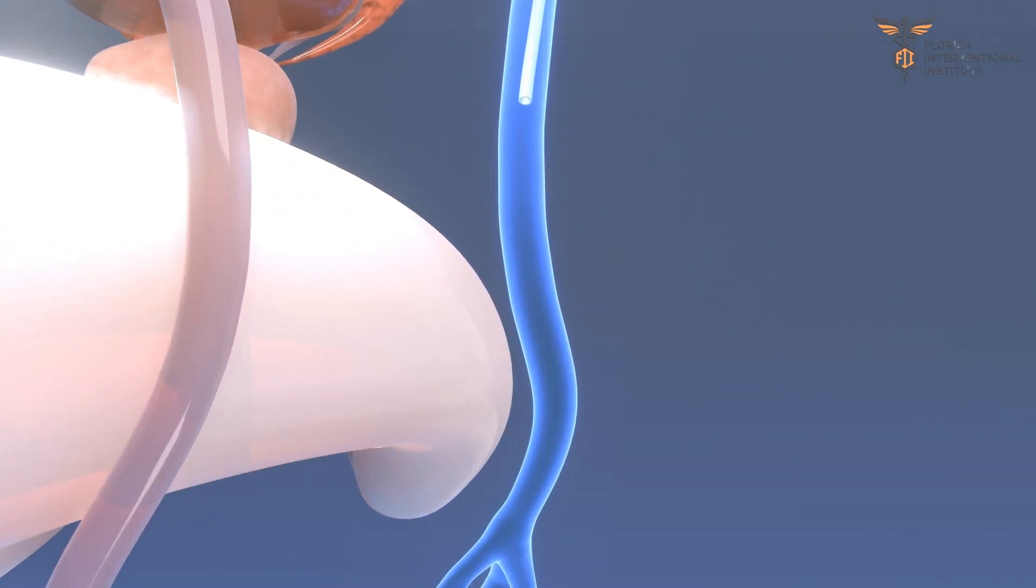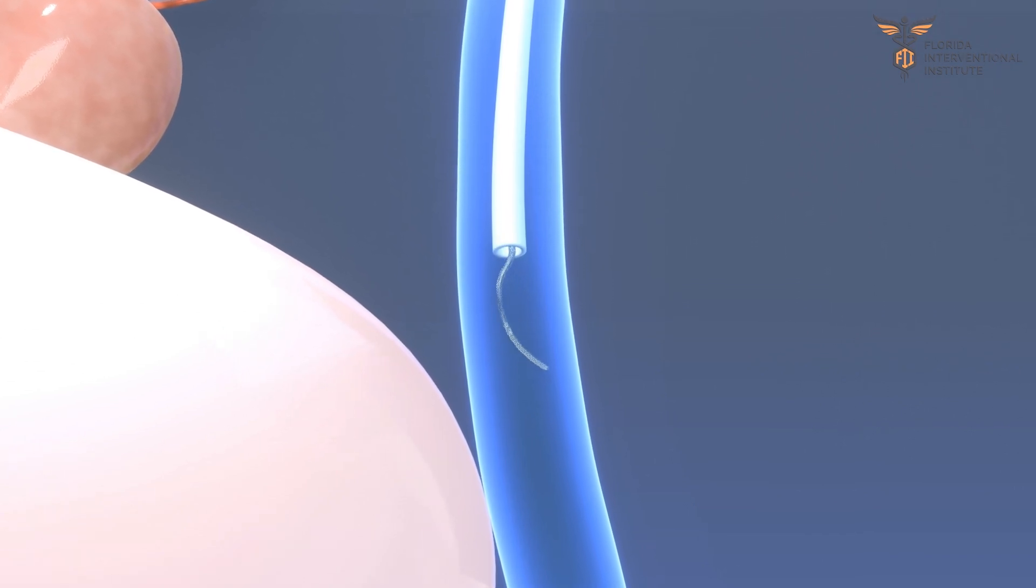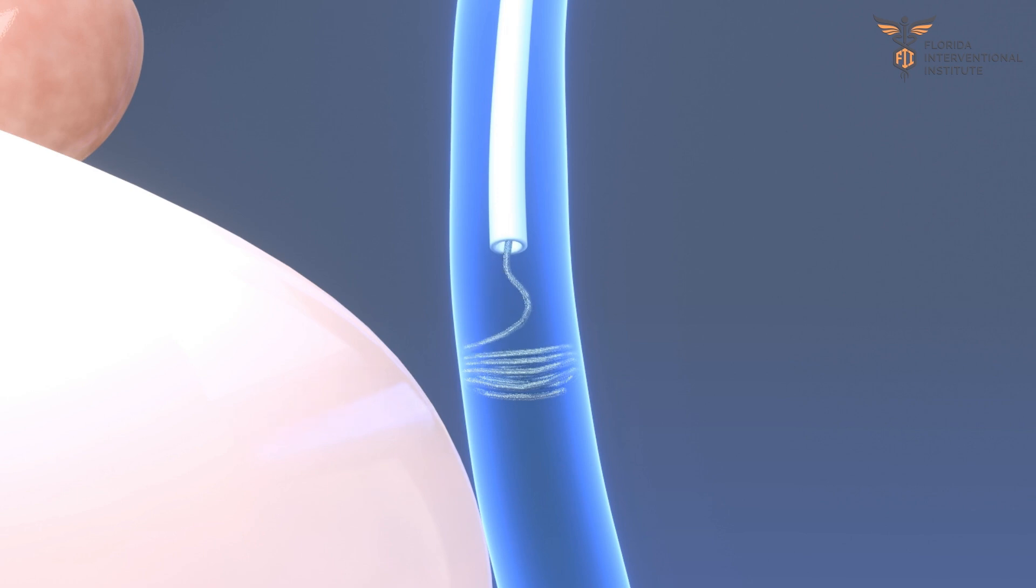Next, a specialized device called a coil is introduced into the vein and is formed in the vein. This coil mass blocks the central channel of the vein and prevents the reversed flow of blood.